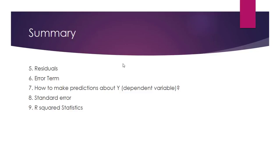How to make predictions about Y: once we have written down the sample regression equation, given the value of X we simply substitute it into the sample regression line to make a prediction of Y. Remember, this is only a prediction and is likely to contain an error. The standard error measures the variation in sample coefficient estimates — if you were to resample from the population repeatedly, it can also be interpreted as a measure of how reliable the sample coefficient estimates are. Finally, R-squared statistics reports the proportion of variation in Y that is explained by the model — it's a measure of how good the model is. You have finished the lecture on simple regression.